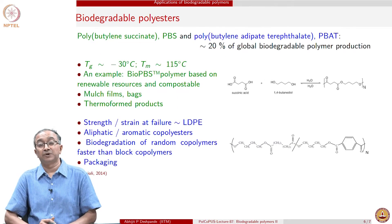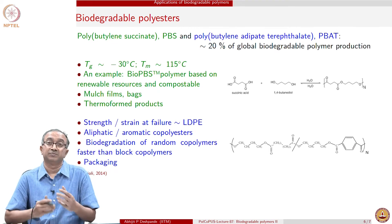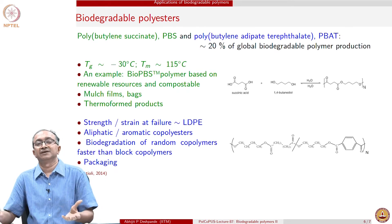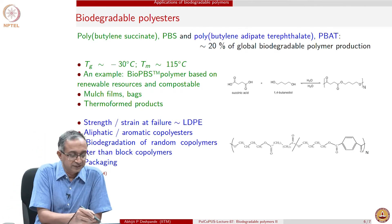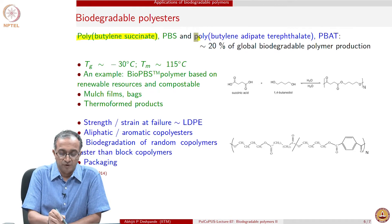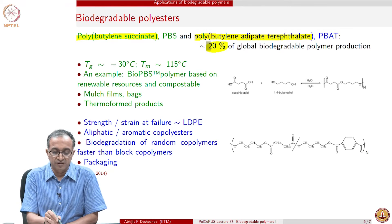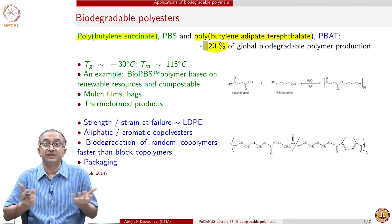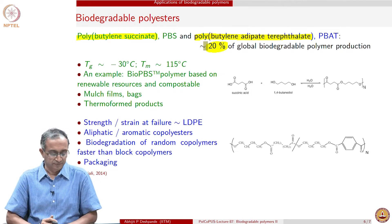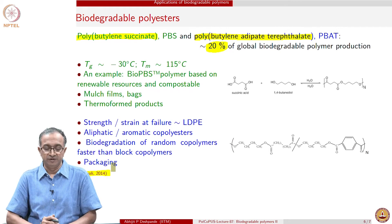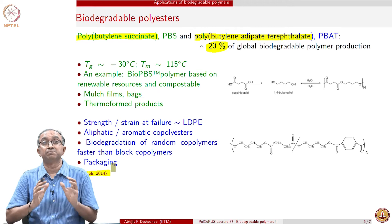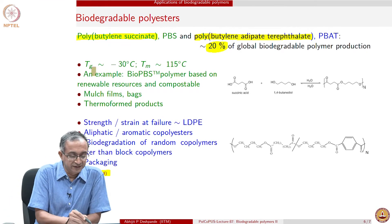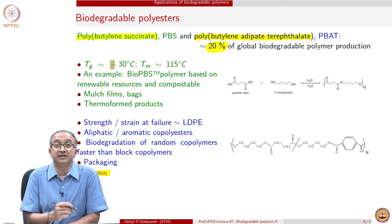Another common class of biodegradable polymers are polyesters. As we have seen, polyesters have a natural tendency to get attacked by water and yield carboxylic acid and alcohol. Examples include polybutylene succinate (PBS) and polybutylene adipate terephthalate (PBAT). These form about 20 percent of overall biodegradable polymer production — quite significant. Their properties are similar in some respects to polyethylene and polypropylene.